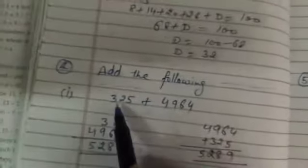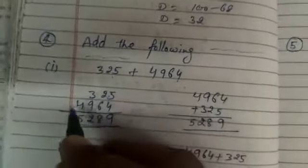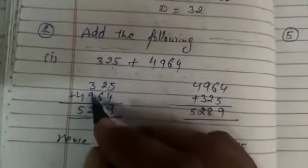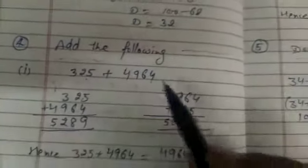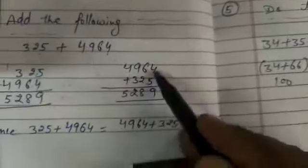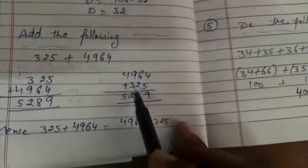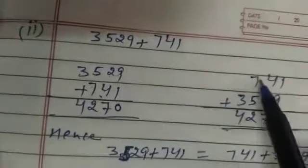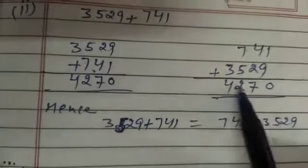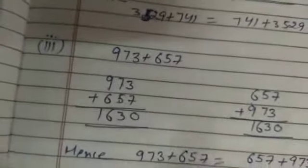Question number 4: add the following and check by reversing the order of the addends. For example, 325 plus 4964 — add them in order, then swap and add 4964 plus 325; both give the same result. Similarly, 3529 plus 741 or 741 plus 3529 — the result is the same either way.